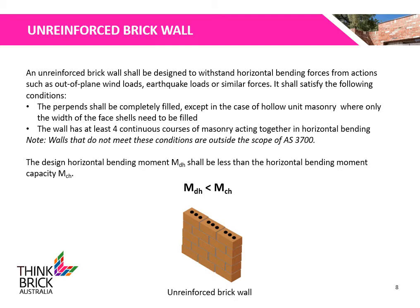An unreinforced brick wall shall be designed to withstand horizontal bending forces from actions such as out-of-plane wind loads, earthquake loads, or similar forces. It shall satisfy the following conditions: the perpens shall be completely filled, and the wall must have at least 4 continuous courses of masonry acting together in horizontal bending. Walls that do not meet these conditions are outside the scope of AS3700. The design horizontal bending moment, MDH, shall be less than the horizontal bending moment capacity, MCH.